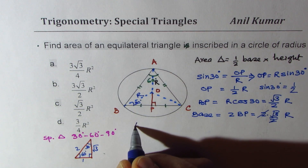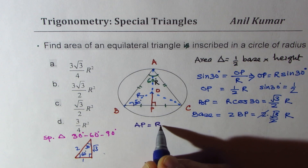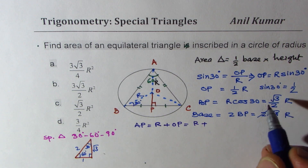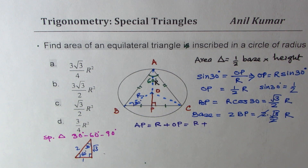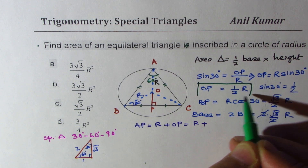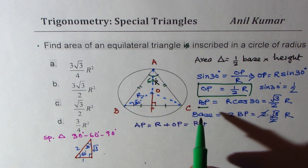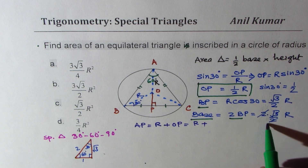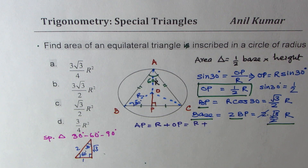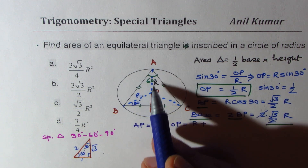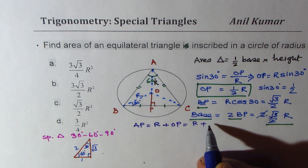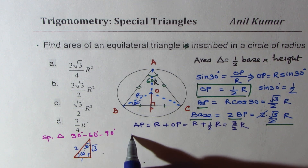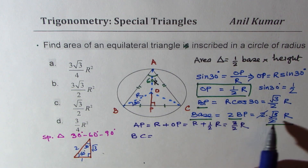The height AP equals R plus OP. Since OP is R/2, the height AP equals R + R/2, which is 3R/2. And BC, which is the base, equals √3R.